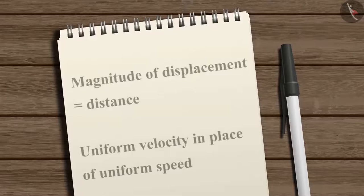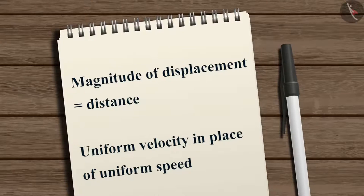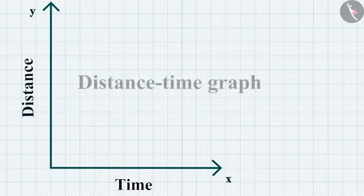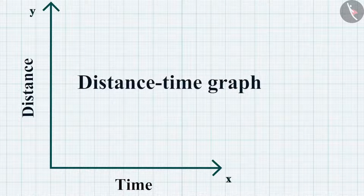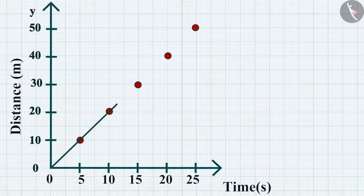If the magnitude of displacement is equal to the distance travelled by the object, then we can use the term uniform velocity in place of uniform speed. We can also determine the speed of an object from the distance-time graph. The speed of an object is determined by calculating the slope of the distance-time graph.